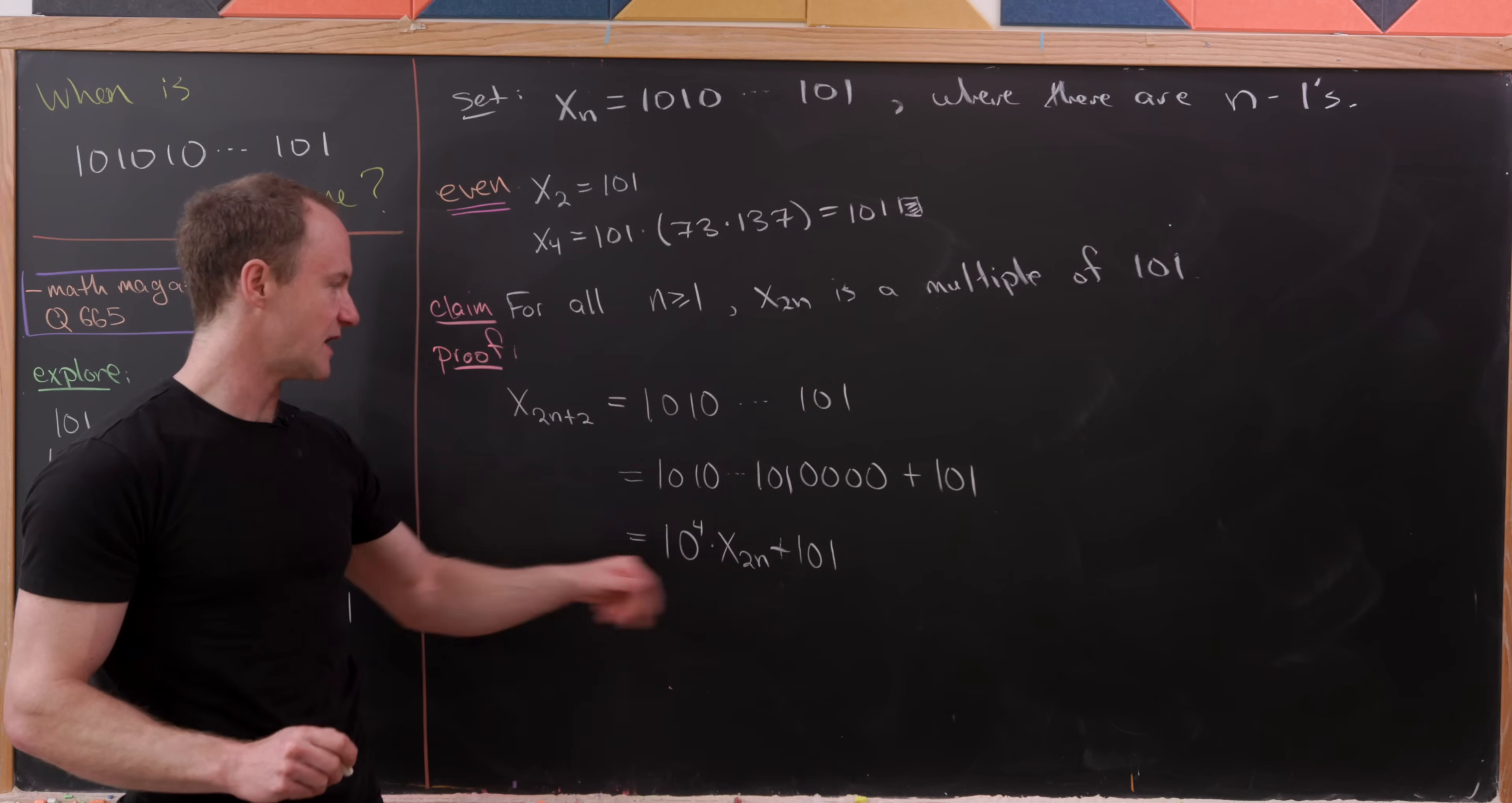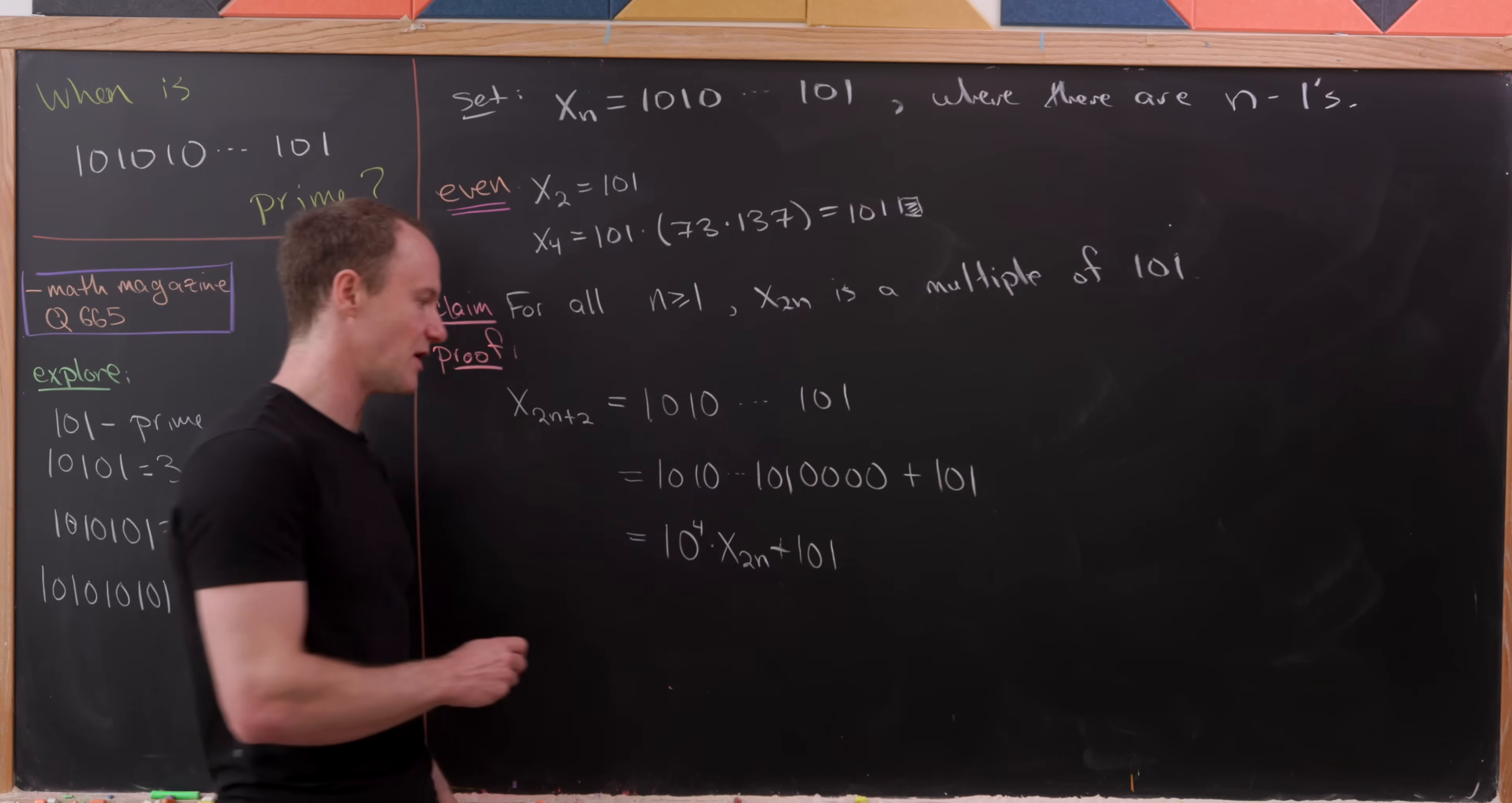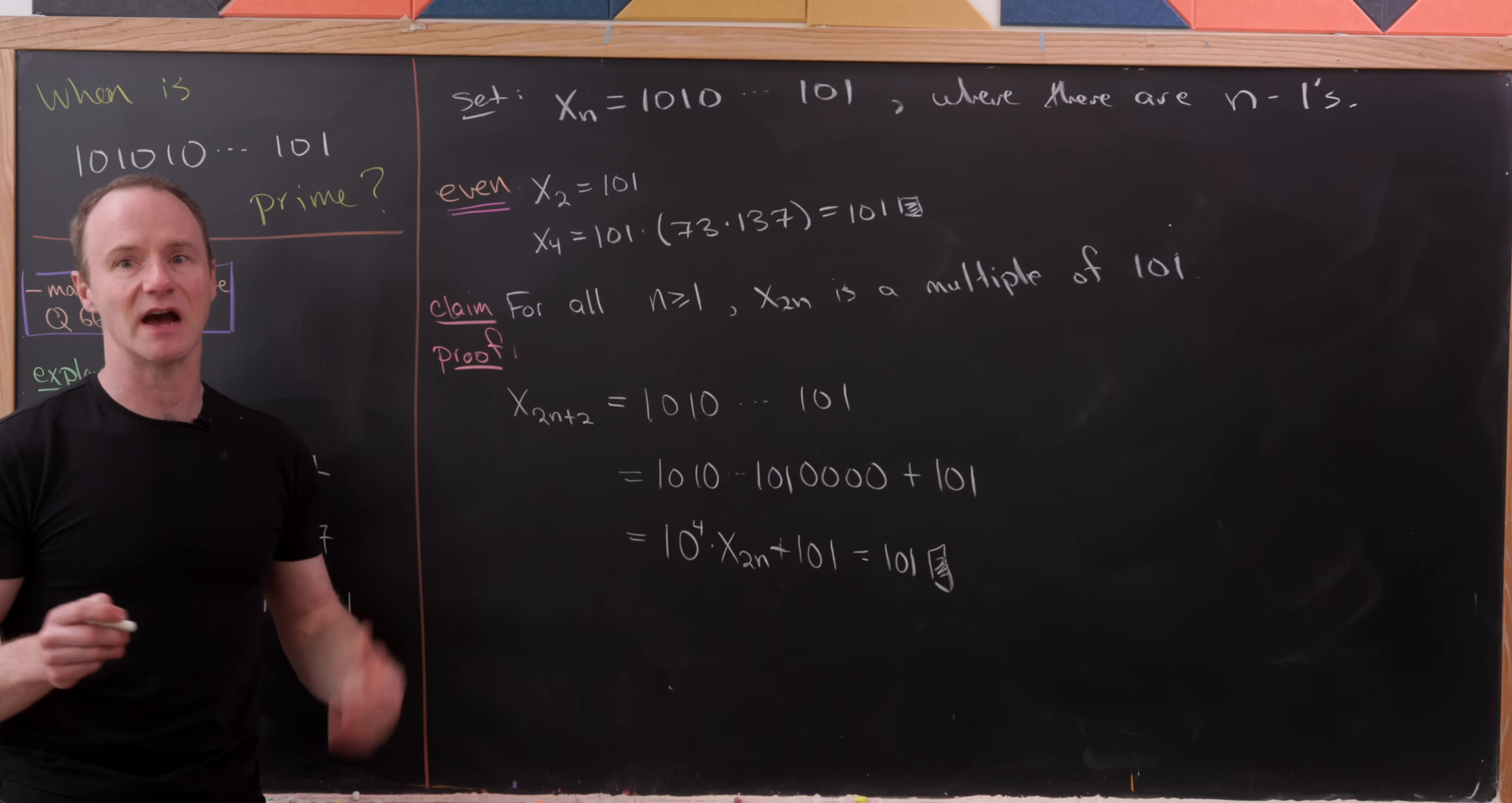And how do we know that that's x sub 2n? Well, if this started with 2n plus 2 ones, we rewrote it like this, then there are necessarily 2n ones right here. But now let's observe that x sub 2n by our induction hypothesis can be written as a multiple of 101. But then we've got a 101 here as well. So this is the sum of two things that are multiples of 101, which means in the end, we could write this as 101 times some number. In other words, it's a multiple of 101. And so that takes care of all of the even cases. We've shown that the even cases give us a single prime number when x2 is equal to 101, but it doesn't give us any other prime numbers.